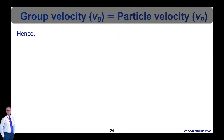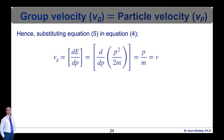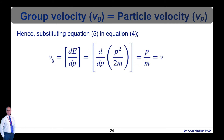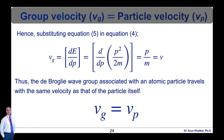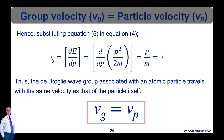Substituting the value of energy E into equation 4, we get vg = d/dp(p²/2m). After simplification, vg = p/m. Since momentum p = mv, we have v = p/m, so vg = v. Thus, the de Broglie wave group associated with an atomic particle travels with the same velocity as that of the particle itself. Group velocity equals particle velocity.